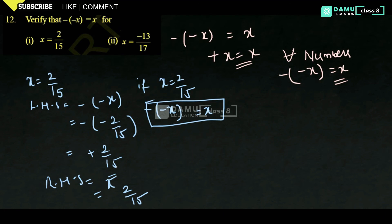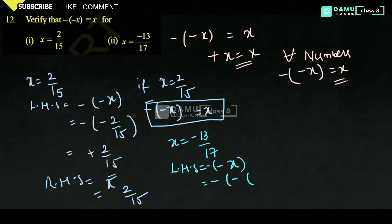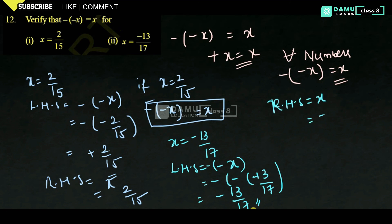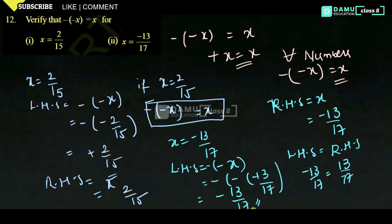Next, for X equals minus 13/17: LHS equals minus of minus X, that is minus of minus 13/17. Minus into minus becomes plus, so we get minus 13/17. RHS equals X, that is minus 13/17. So LHS equals RHS, both equal minus 13/17. This is because minus into minus becomes plus, and then multiplied by minus 13/17 gives minus 13/17.